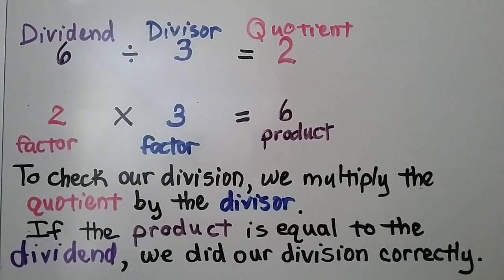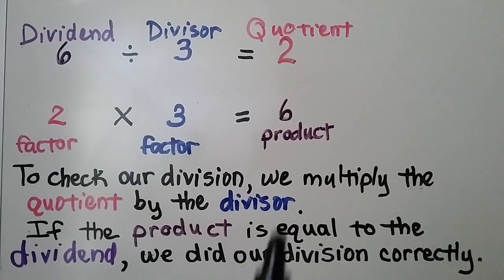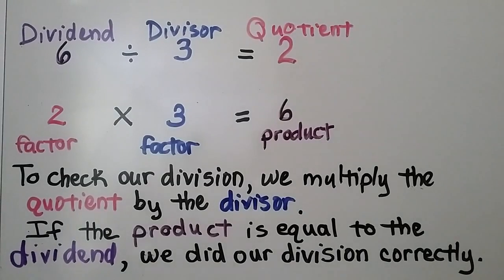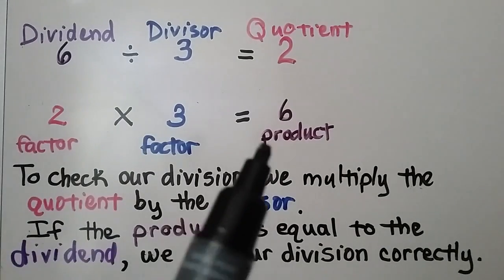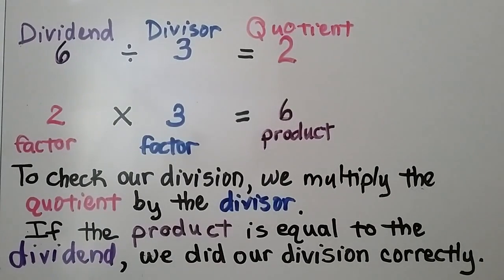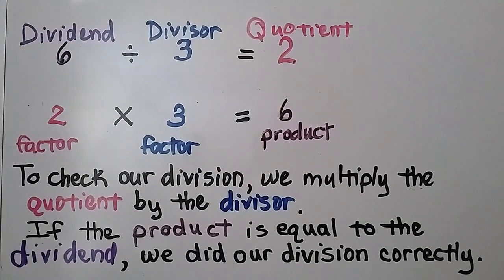To check our division, we multiply the quotient by the divisor. If the product is equal to the dividend, we did our division correctly. We just use the quotient and the divisor as our factors, and then the product — 6 — will be the same thing as the dividend if we did it correctly.